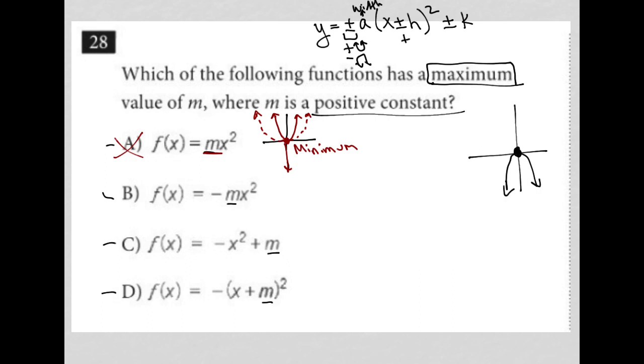A plus h here means you're shifting to the left. That's why the arrow is pointed to the left. A negative h means you're shifting right h units.